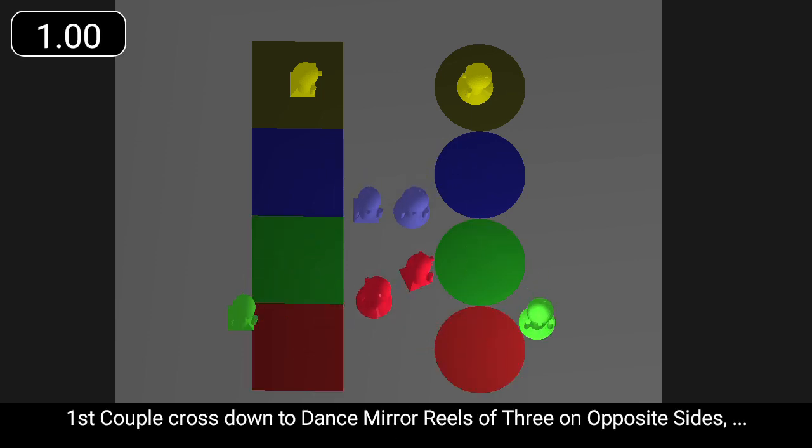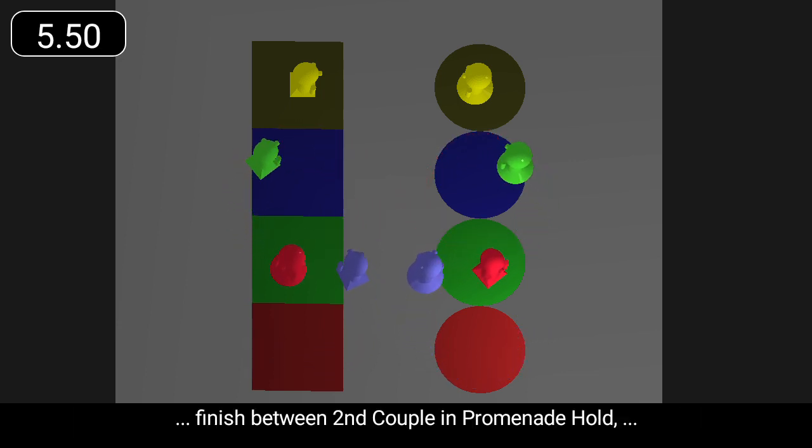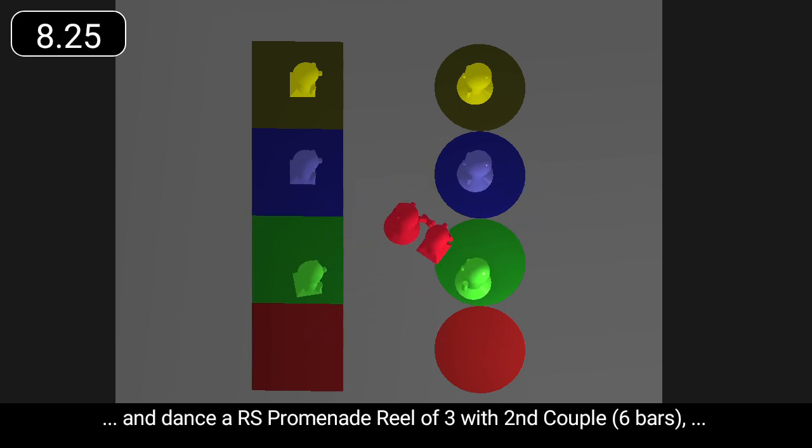First couple cross down to dance mirror reels of three on opposite sides. Finish between second couple in promenade hold. And dance a right shoulder promenade reel of three with second couple.